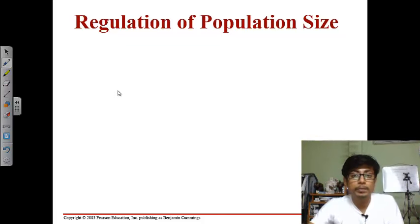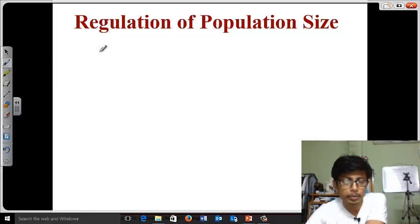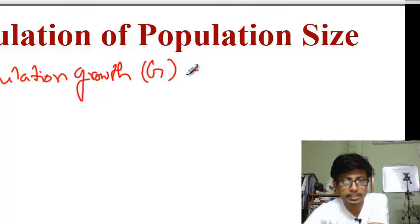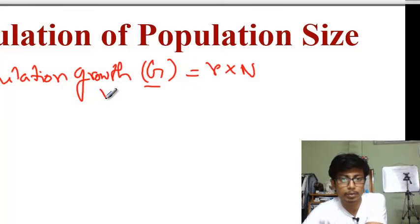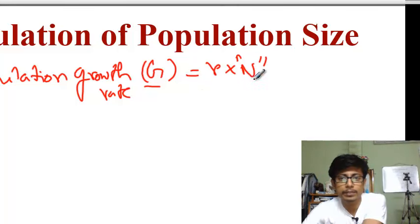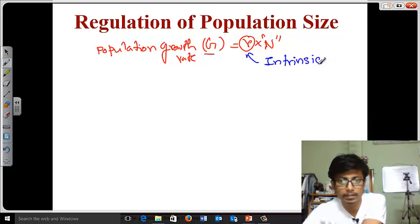Welcome back guys. In this video tutorial we'll be talking about population size and growth, and how to regulate population size. For the understanding of population growth, what we need to know is that population growth is denoted with capital G. Capital G equals capital G multiplied by capital N, where capital G is the population growth rate. Capital G equals small r multiplied by capital N. Capital N is the number of individuals in the population, and small r is the intrinsic growth rate.